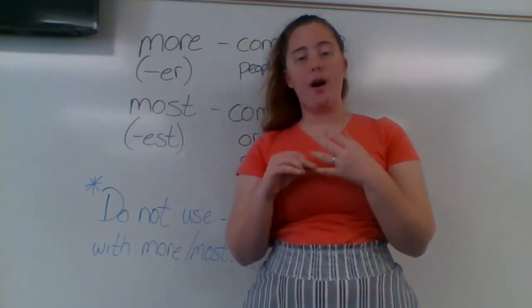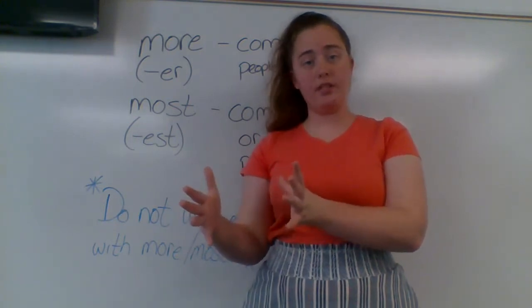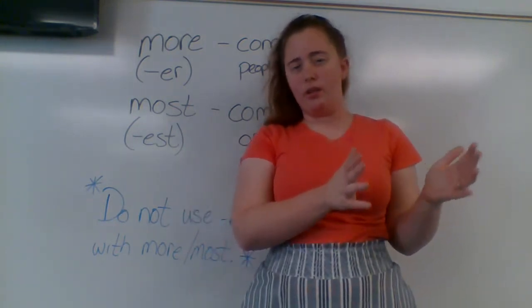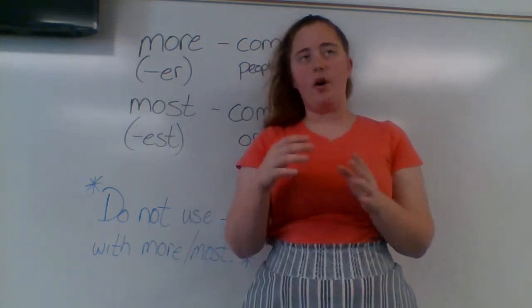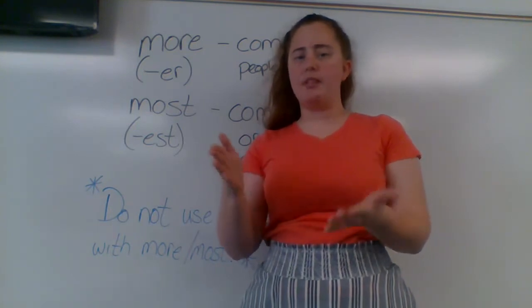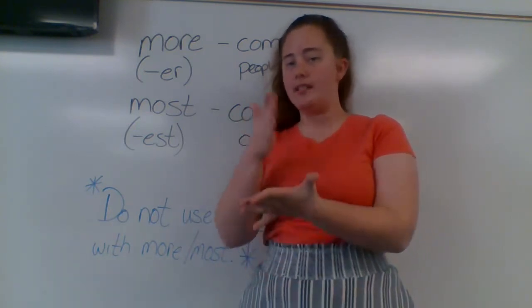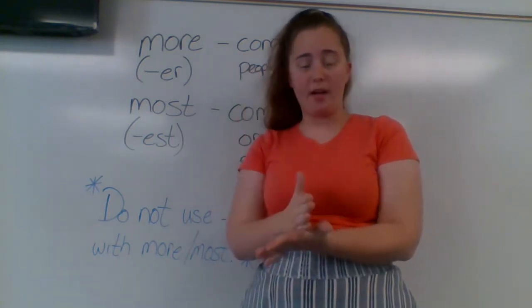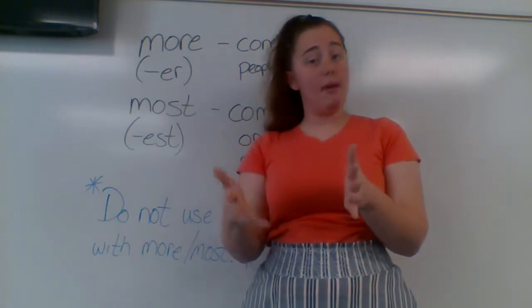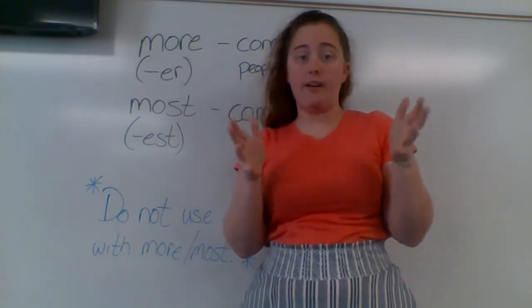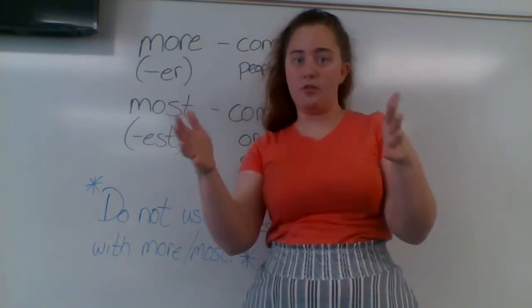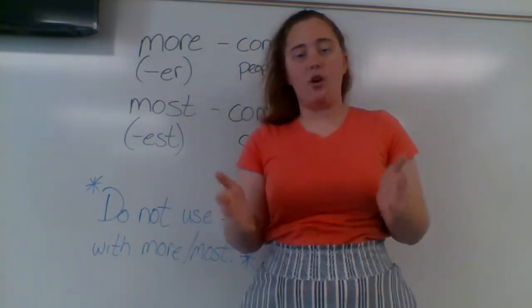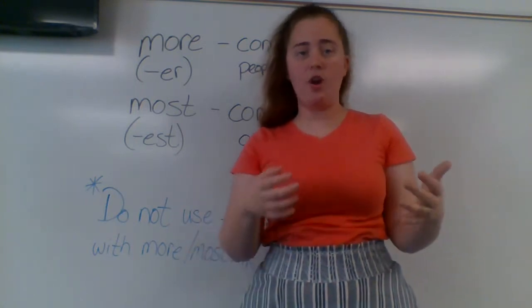So I have 'hard and fast rules' and I have 'rule of thumb.' A hard and fast rule is something that is always the case — it's always going to happen no matter what. For example, in math, a hard and fast rule is 2 plus 2 equals 4. That's a hard and fast rule; it's not going to change.